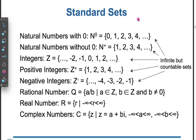Standard sets: Natural numbers with 0, denoted N0 = {0, 1, 2, 3, 4, ...}. Natural numbers without 0, denoted N+ = {1, 2, 3, 4, ...}.